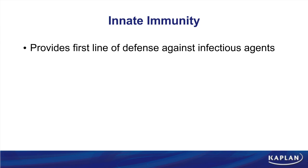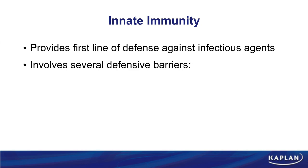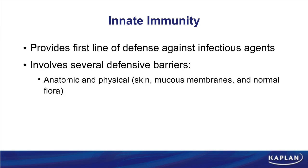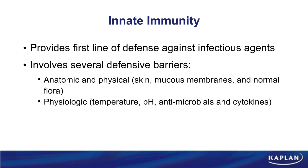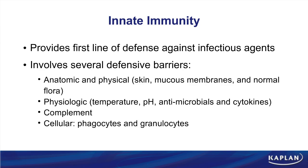The innate immune response is going to provide us with our first line of defense against a variety of pathogens. There are going to be several barriers that comprise the innate immune response. First, and probably most important, is the simple anatomic barrier presented by the skin and mucosa. Once that is compromised, we're going to have a couple of really good backup plans, including some of the physiological aspects of defense — complement in the humoral aspect — as well as our phagocytes and our granulocytes. When you put all of these things together, you're going to have the presentation of inflammation.